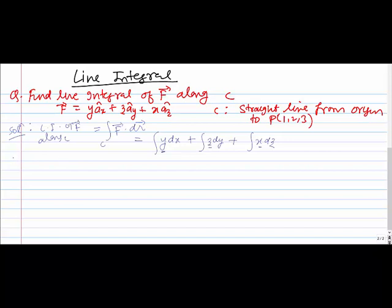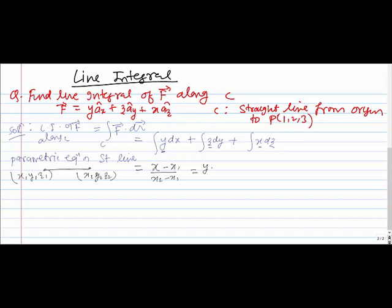To handle this, I am introducing the concept of the parametric equation of a straight line. If a straight line has endpoints (x1, y1, z1) and (x2, y2, z2), then its parametric equation is: (x − x1)/(x2 − x1) = (y − y1)/(y2 − y1) = (z − z1)/(z2 − z1) = λ. Remember this — it is the parametric equation of a straight line with two given endpoints. For our case, (x1, y1, z1) is the origin and (x2, y2, z2) is point P(1, 2, 3).